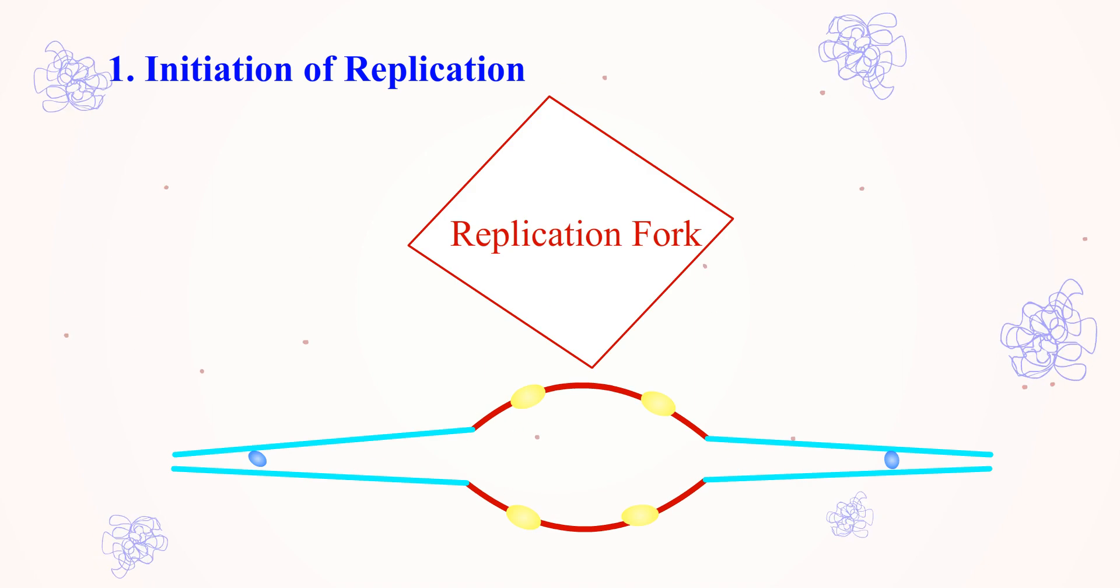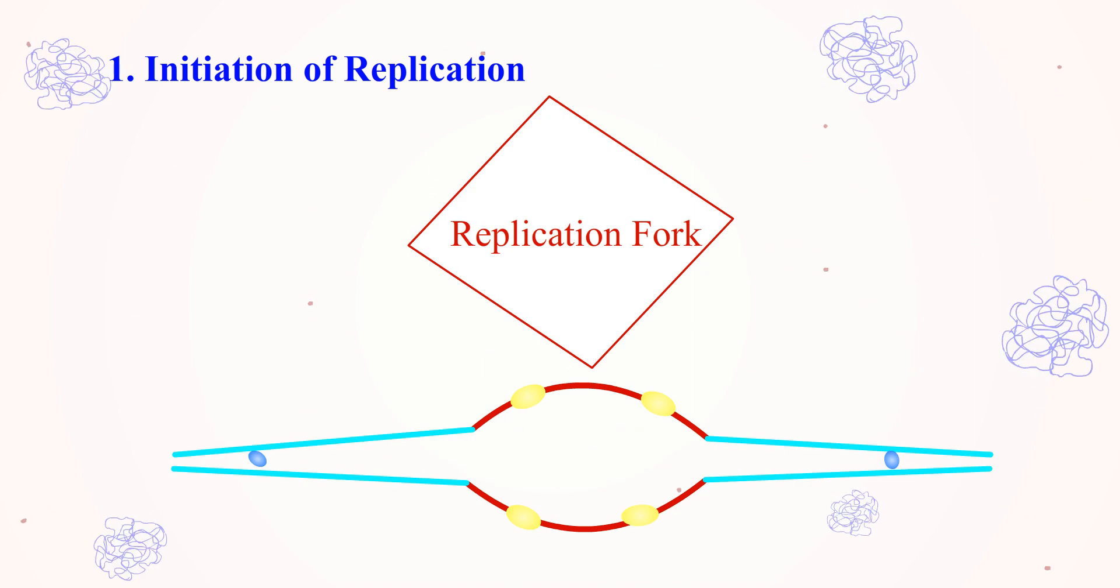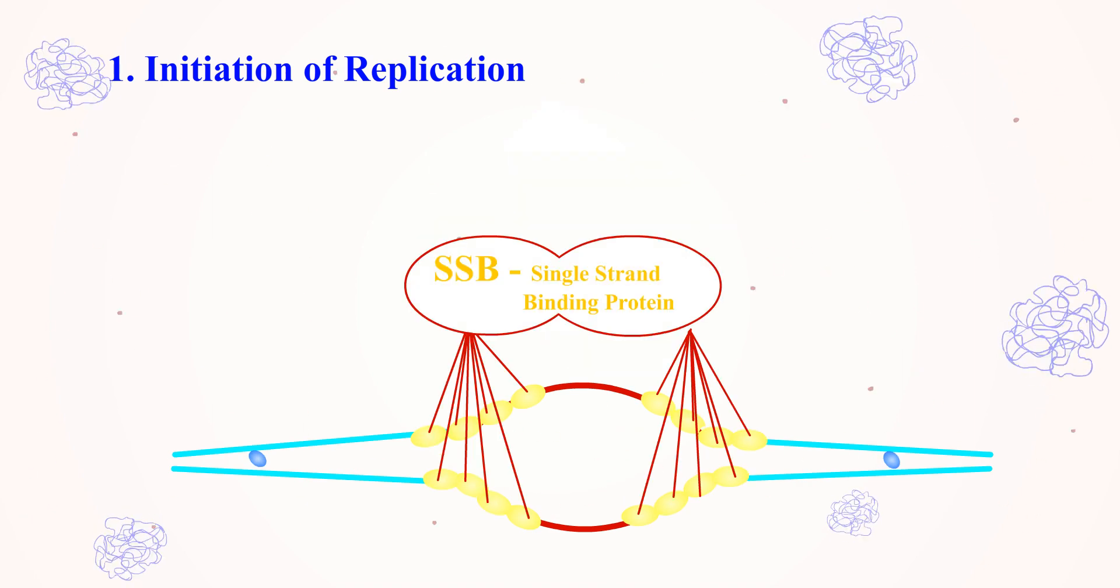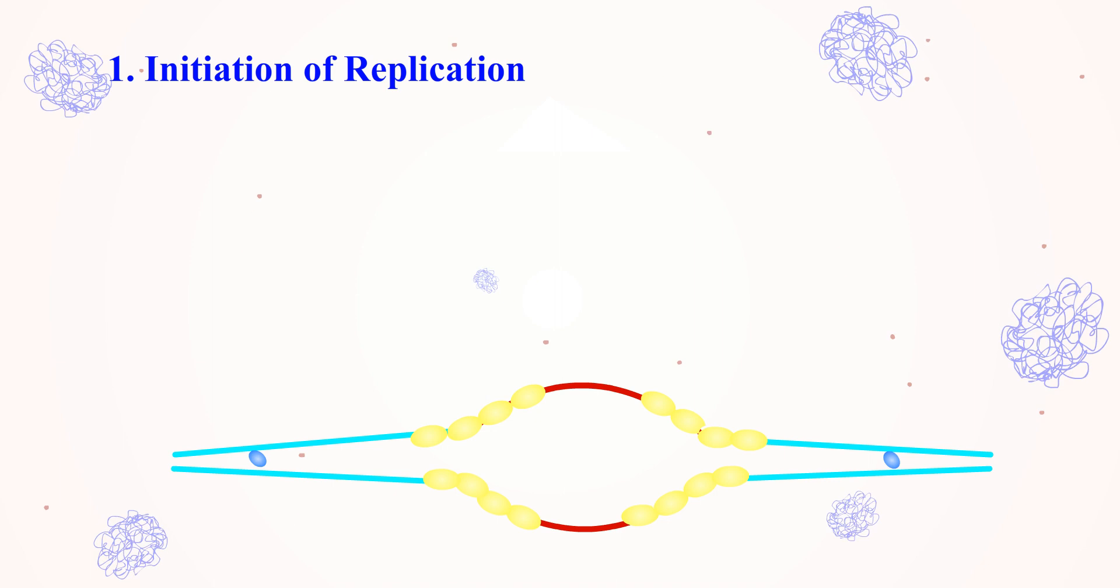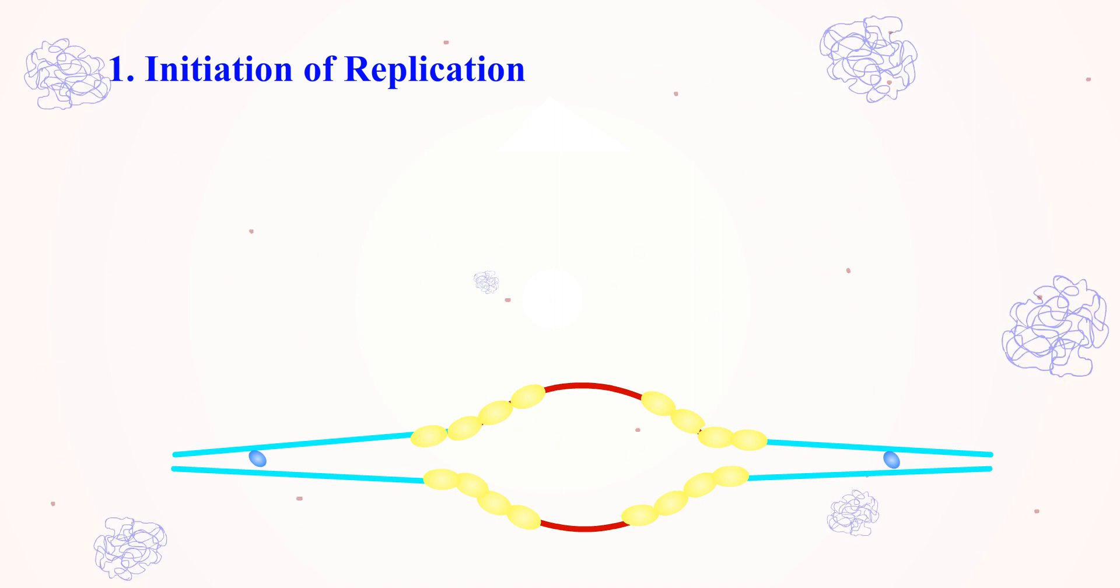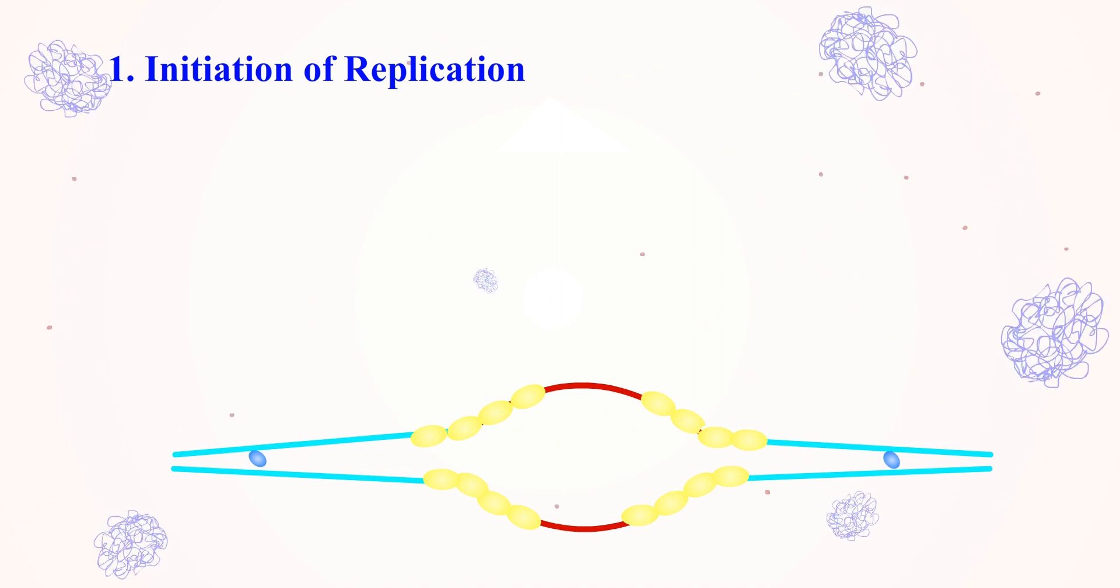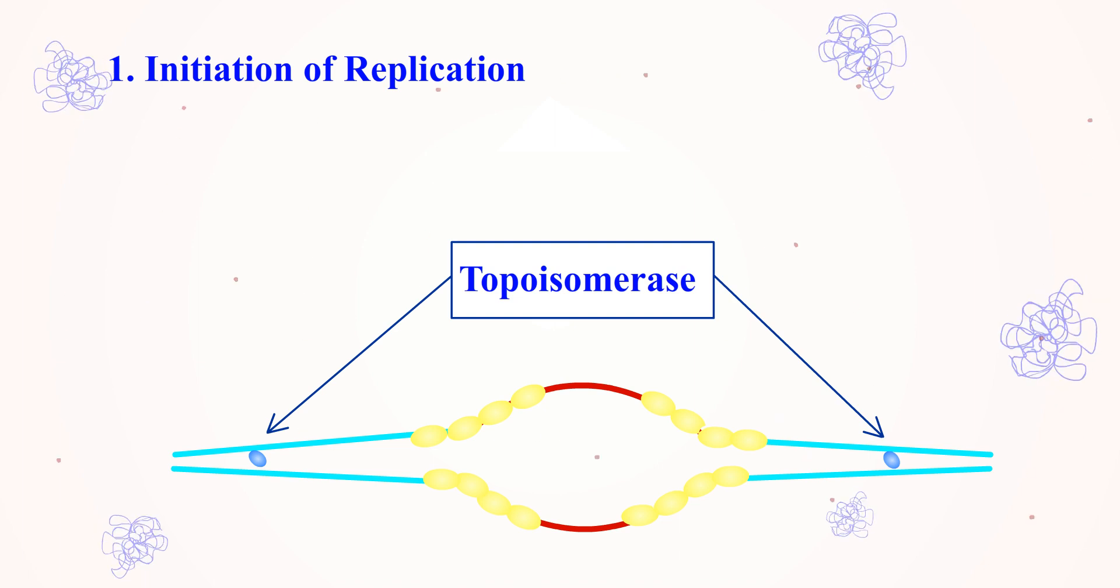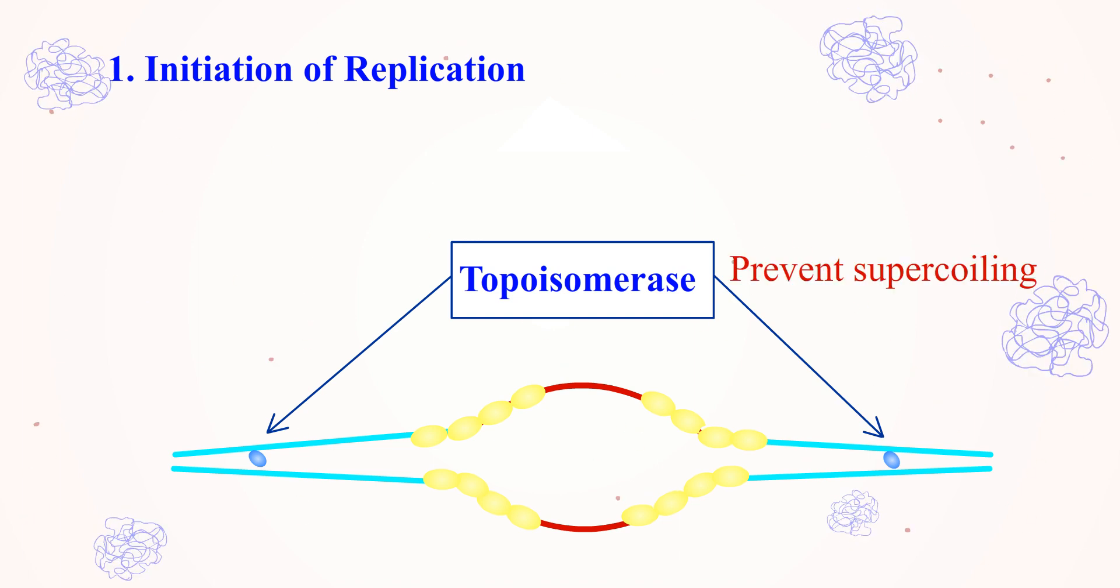Then, a replication fork is created with help of enzymes. The single-strand binding proteins will bind to separated DNA strands to prevent them from binding together again. Another enzyme called topoisomerase will prevent the supercoiling of DNA.